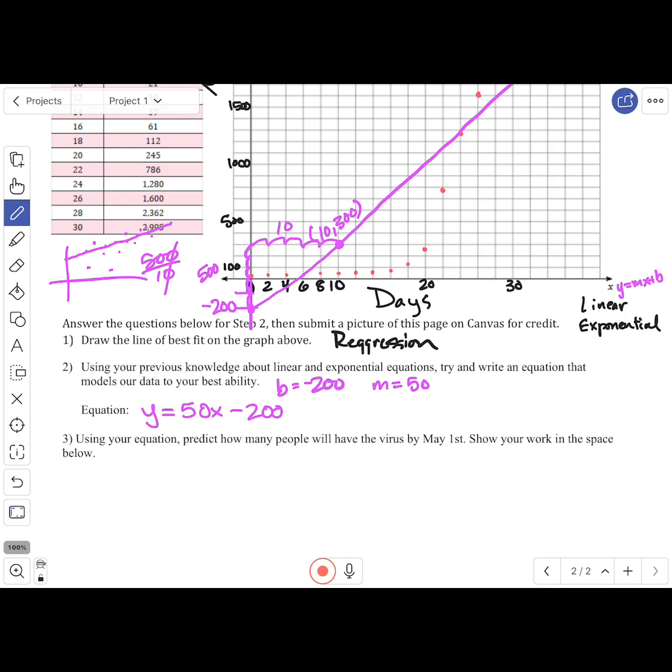So there's my equation. Then, it would say, using your equation, predict how many people will have the virus by May 1st. This is why we do regression lines - it's predictions. We want to be able to predict things as best as we can.